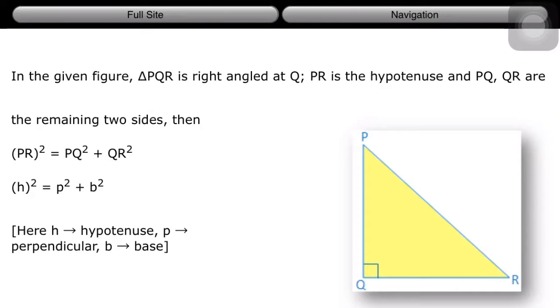That means we can write PR² = PQ² + QR², or h² = p² + b², where h is the hypotenuse, p is the perpendicular or altitude or height, and b is the base of the right-angled triangle.